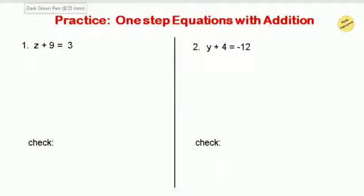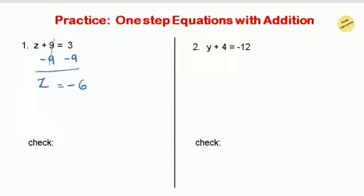The first question: z plus 9 equals 3. There is an addition operator, so we do the inverse — subtraction. The subtraction property of equality tells us to subtract the same number from both sides. Subtracting 9 from both sides: on the left, 9 minus 9 gives 0, so z remains. On the right, 3 minus 9 equals negative 6. Be careful with integer subtraction — with two different signs, subtract and keep the sign of the greater number.